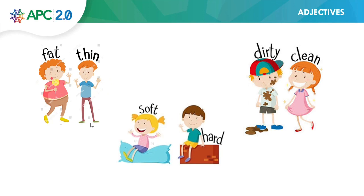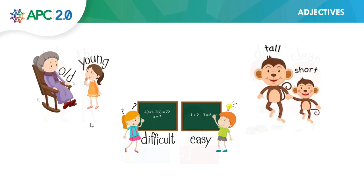Here we have more: old, young, difficult, easy, tall, and short. Now it's your turn: old, young, difficult, easy, tall, and short.